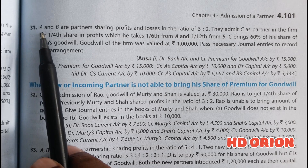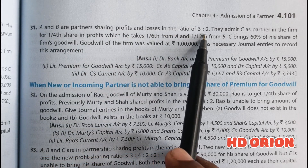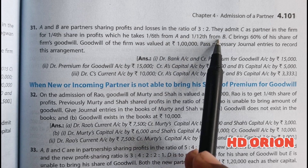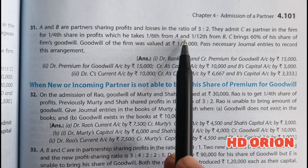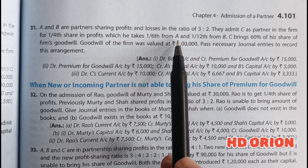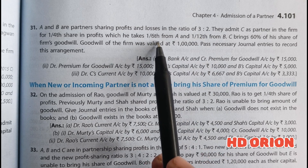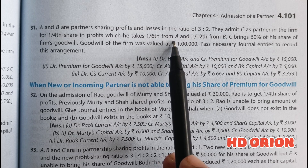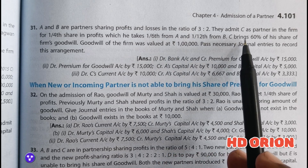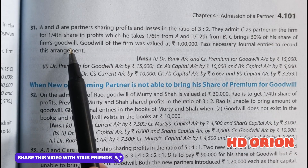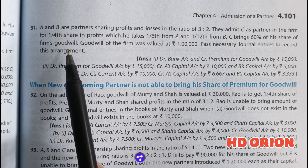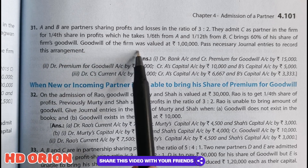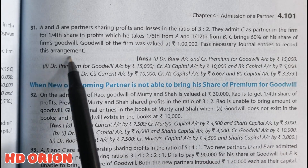Question number 31: A and B are partners sharing profits and losses in the ratio of 3:2. They admit C as a partner in the firm for one-fourth share in the profits, which he takes one-sixth from A and one-twelfth from B. Because the sacrificing ratio is already given in the question, the new ratio will be different from the old ratio for A and B. Here, one-sixth and one-twelfth are the sacrificing ratios of A and B, which simplifies to 2:1. C brings 60% of his share of the firm's goodwill. Goodwill of the firm was valued at Rs. 1 lakh. Pass necessary journal entries to record this arrangement.